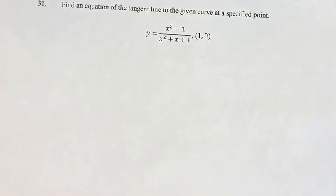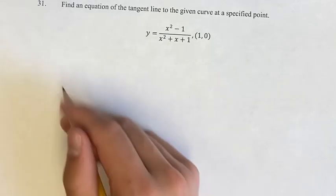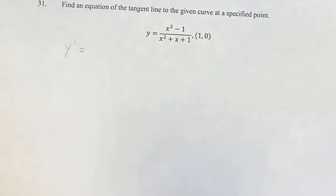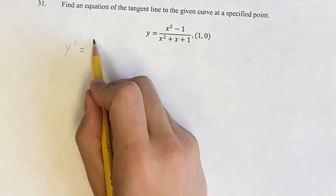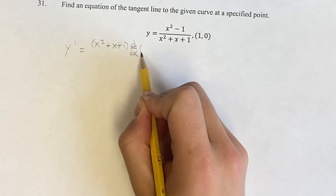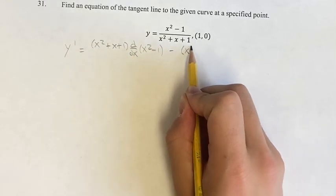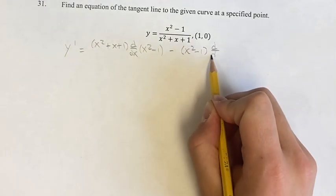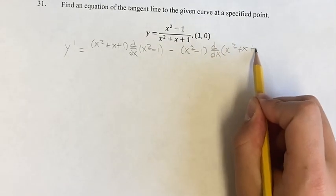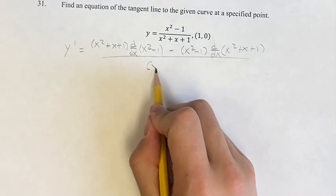So the first thing we're going to do is find the slope using the derivative. We're going to do that using the quotient rule. So that's going to involve the denominator times the derivative of the numerator minus the numerator times the derivative of the denominator. This is over the denominator squared.